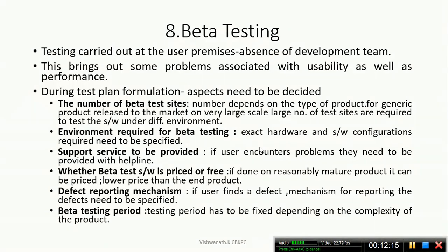Beta Testing brings out problems associated with usability as well as performance. The two main important points checked during Beta Testing are usability problems and performance issues.